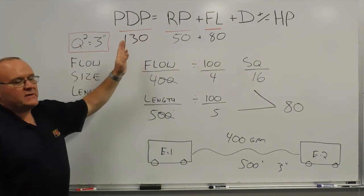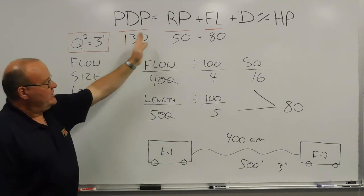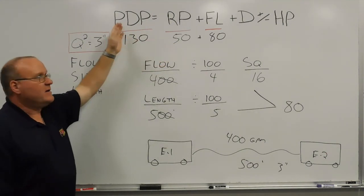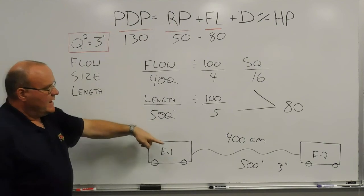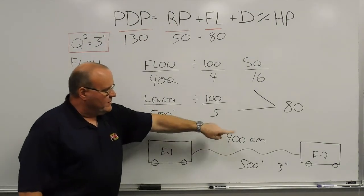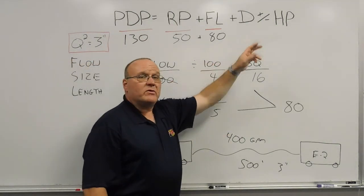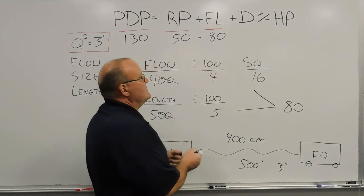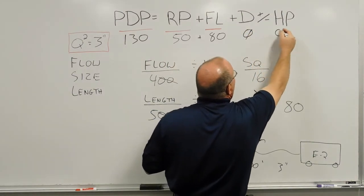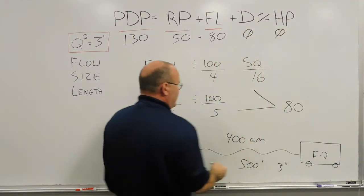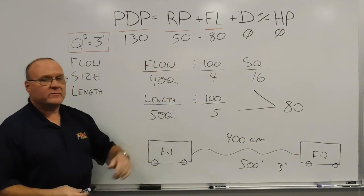Just as a habit of accounting for all the elements needed to calculate pump discharge pressure: there are no devices in line, and we're not going up or down in elevation, so those two elements will be zero. Always account for them as a habit.